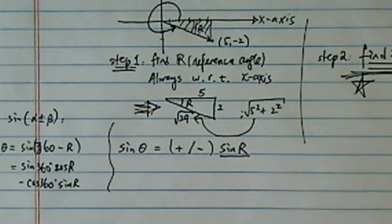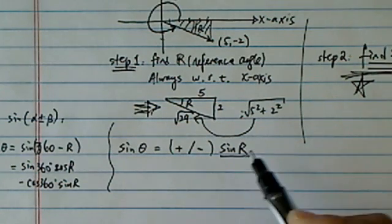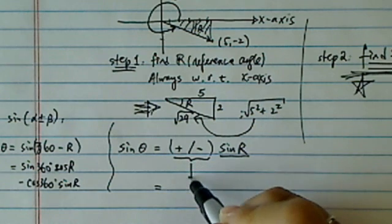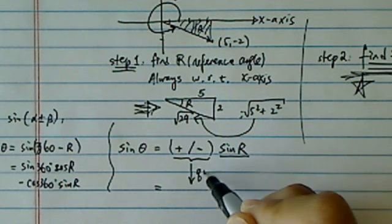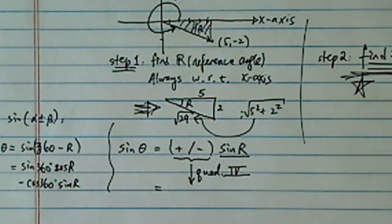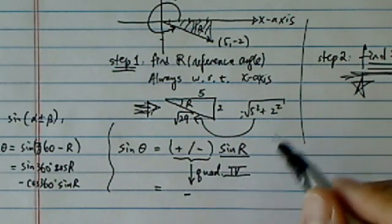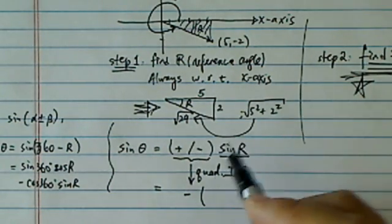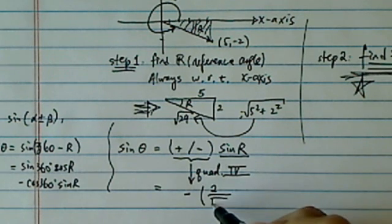So sine theta is related to sine r. From here, step two is choosing whether it's plus or minus. In quadrant four, Roman numeral IV, my sine is negative. That's why I put a negative sign here. And sine of r, it's really easy for me to find with this triangle. Over here, sine of r is 2 over radical 29.